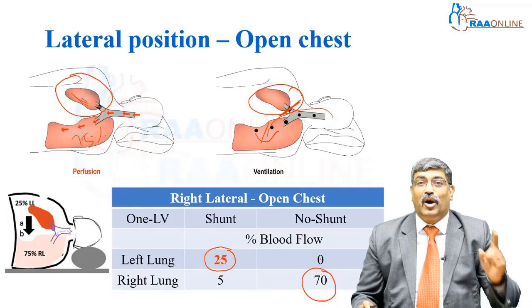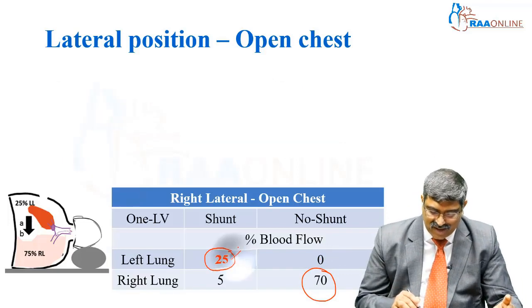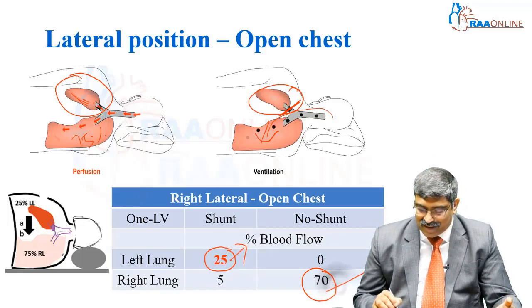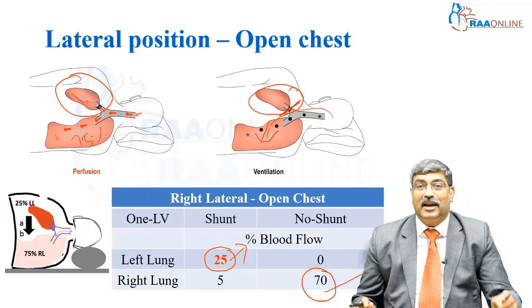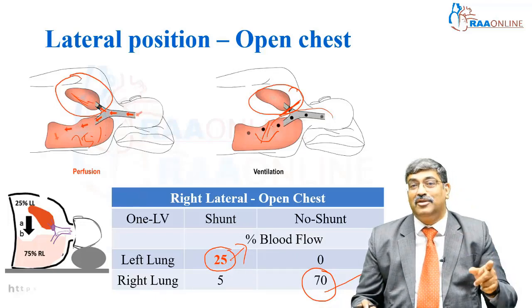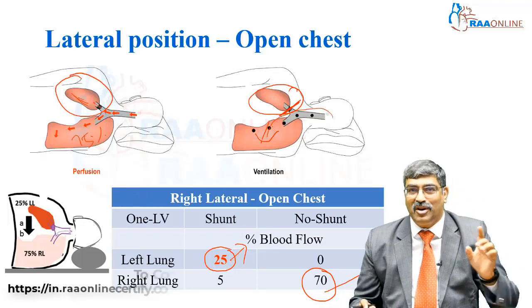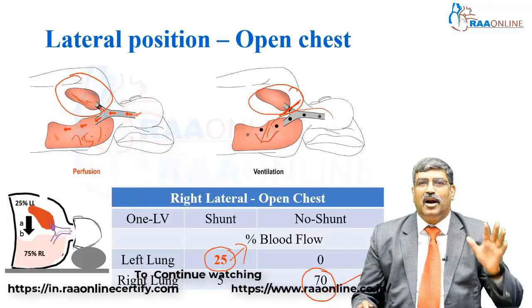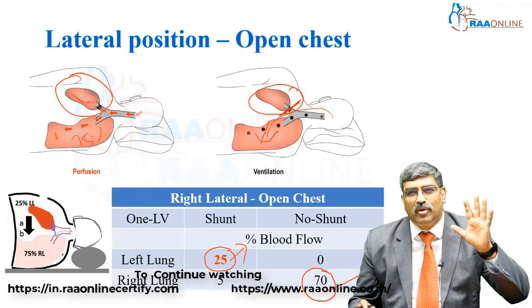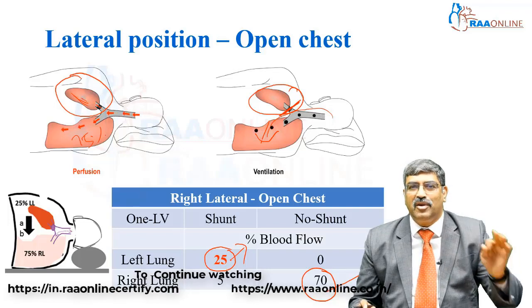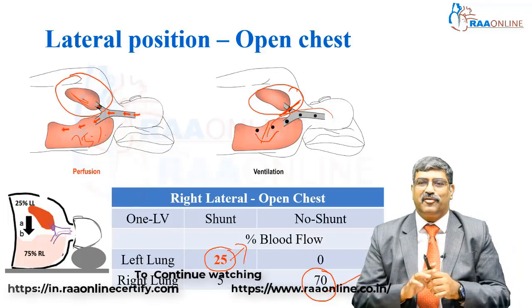The right lung receives around 70 percent of blood flow. The challenge now is to counter this shunt and determine whether the right lung can tolerate the increased pulmonary blood flow. This is the most difficult part, and you must have a good understanding of the physiology of one-lung ventilation before anesthetizing a patient for thoracic surgery.